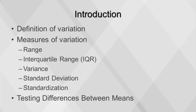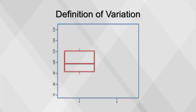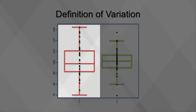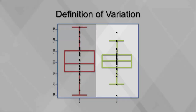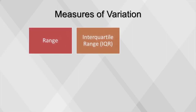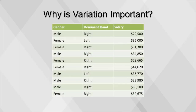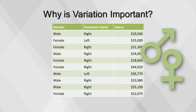This video will cover variation, including a definition of variation and the measures: range, interquartile range, variance, standard deviation, and standardization, as well as testing differences between means. Variation refers to how spread out the values are for a variable. Interpreting variation—explaining a variable's variation in reference to other variables—is a foundational task in business analytics. Variables with values spread out have higher variation, while variables with values very close to the mean have lower variation. Using an example of salaries by gender, a question arises: do men make more than women? Using the principles of variation will help us answer this question.